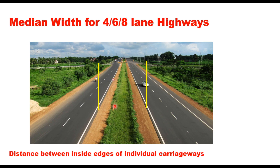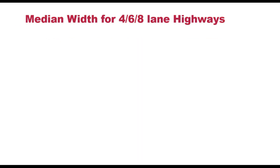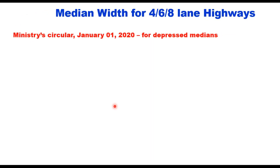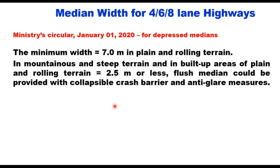MORTH — Ministry of Road Transport and Highways — has issued a circular in January 2020. According to this circular, all multi-lane highways and expressways in the country will be provided with depressed median or flush median depending upon the availability of land. No raised median is permitted now. The minimum width of the depressed median shall be 7 meters in plain and rolling terrain.